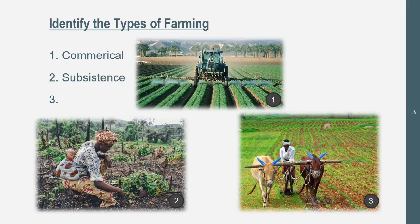The third image is also an example of subsistence farming. We see labor here, not really much mechanization. Yes, we see a decent amount of land; however, I don't actually see many crops. We see livestock, but we don't see many characteristics of commercial farming. That was a really good practice.